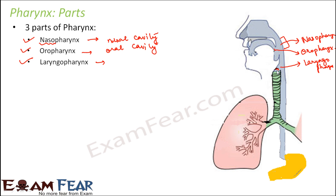At the windpipe, there is a flap-like cartilaginous structure. Whenever food and air arrive, this flap opens only for air to enter the trachea. This flap is known as the epiglottis. The epiglottis acts as a gatekeeper which allows only air to pass through the windpipe and does not allow food to pass through. If any food particle mistakenly enters the windpipe, it can cause immediate suffocation and can result in death.